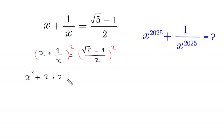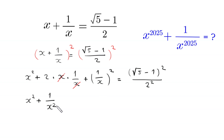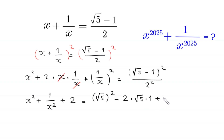Expanding the left side: x squared plus 2 times x times 1 over x plus 1 over x squared is equal to (√5 minus 1) whole squared divided by 2 squared. The 2x times 1/x simplifies to 2, and the right side expands as √5 squared minus 2 times √5 times 1 plus 1 squared, divided by 4.